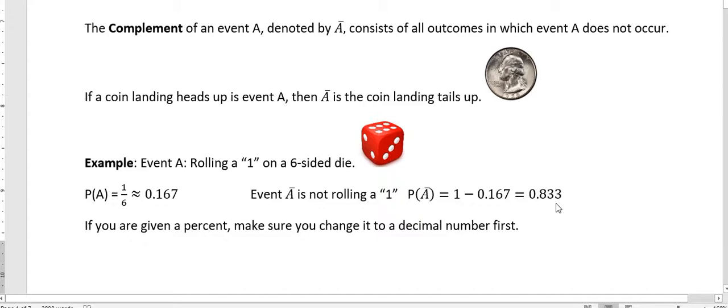Or you could actually just do the calculation separately. So if you are given a percent, make sure to change it to a decimal number first. For instance, if this was 16.7%, I would move it over to change the percent to a decimal and then subtract from one. Okay. So that's the complement of an event, and how to find that complement if you know the probability of the event itself.